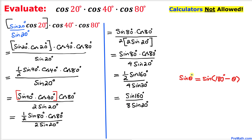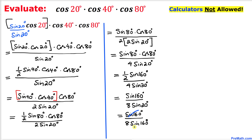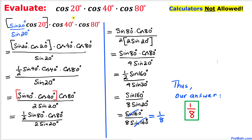Now let's recall the identity: sine of θ equals sine of 180 degrees minus θ. So sine of 20 degrees can be written as sine of 180 minus 20, which is sine of 160 degrees. Therefore, we have sine of 160 degrees in the numerator divided by 8 times sine of 160 degrees in the denominator. Sine of 160 degrees cancels, and we end up with 1 over 8. Thanks for watching — please don't forget to subscribe to my channel for more exciting videos.